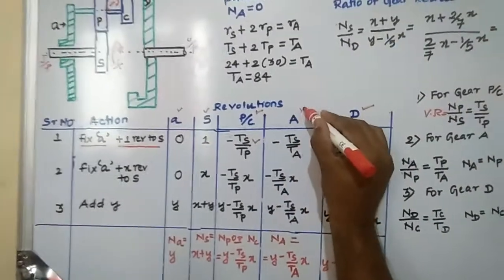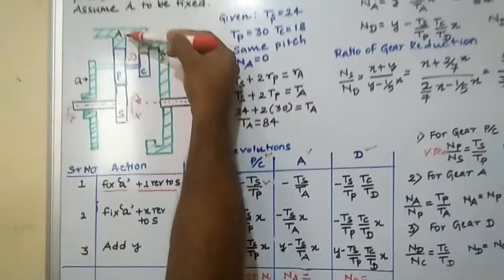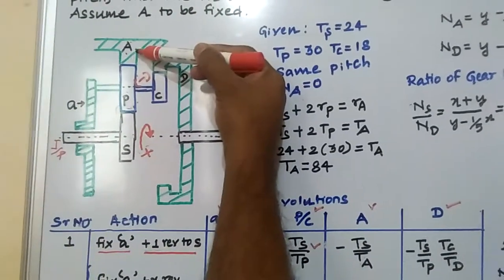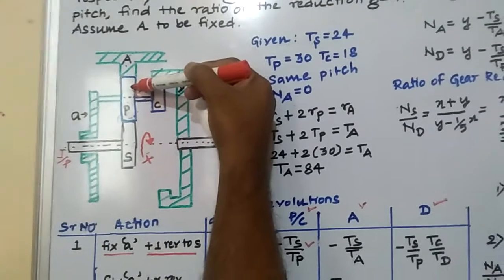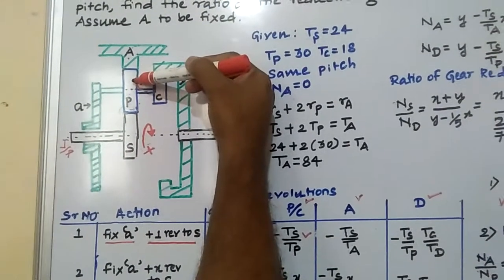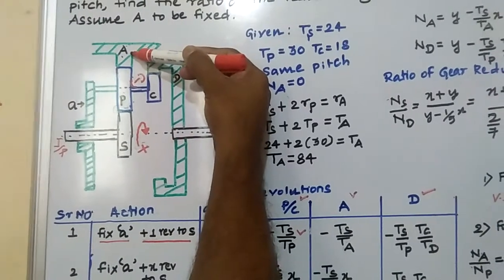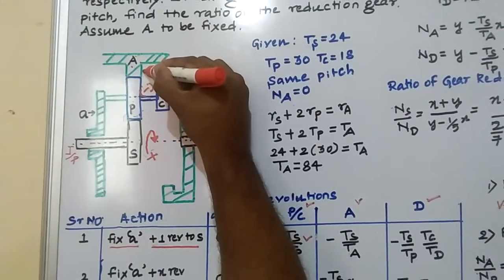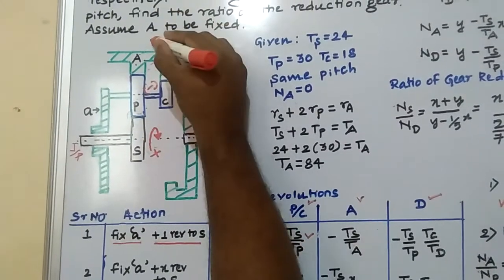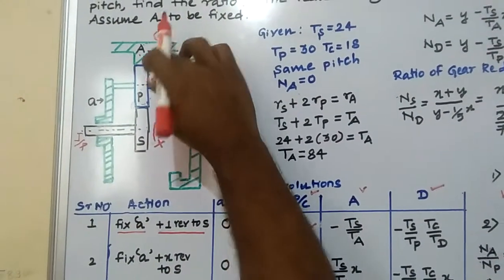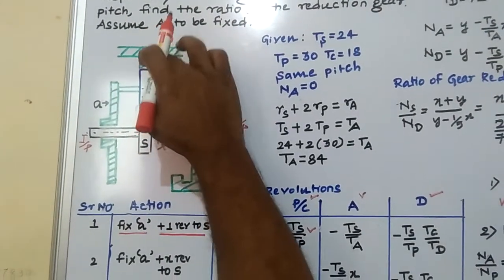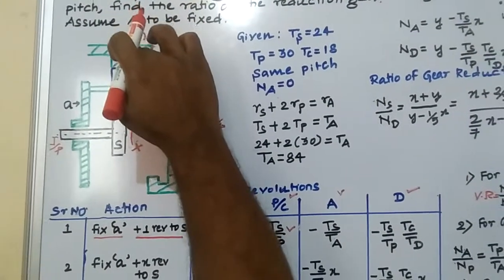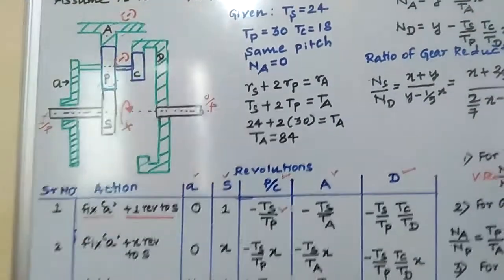Then come to gear A, the annulus gear. Look at the figure — gear A is having internal threads, as seen in the sectional view. It is directly connected to the planet gear. Planet gear becomes the driver, and A gear becomes the driven. Because it has internal threads, the annulus gear also rotates in the anticlockwise direction — both the planet gear and annulus gear rotate in the same direction. That is why both will be negative only.